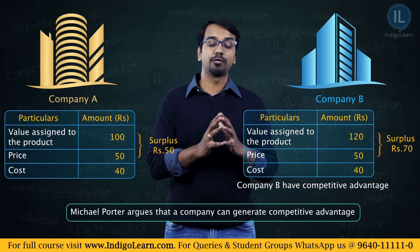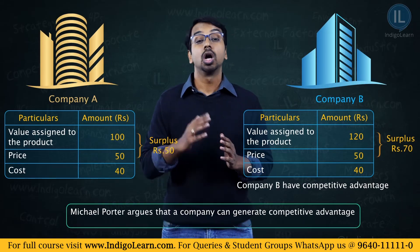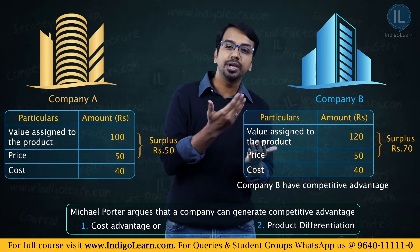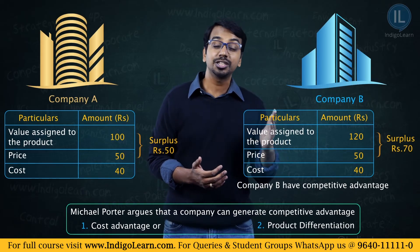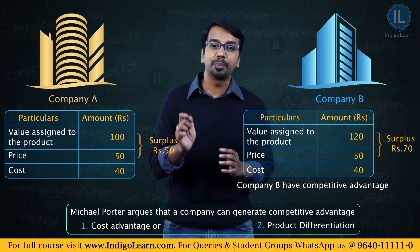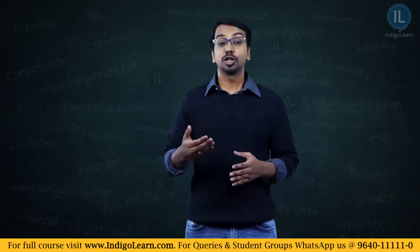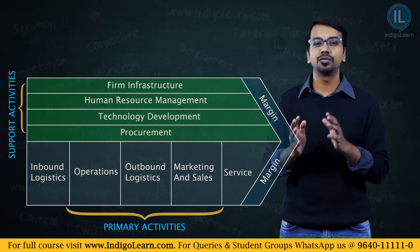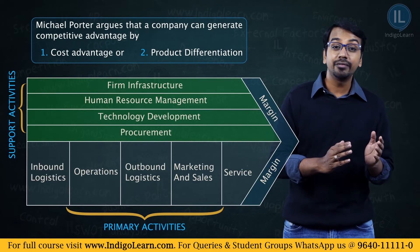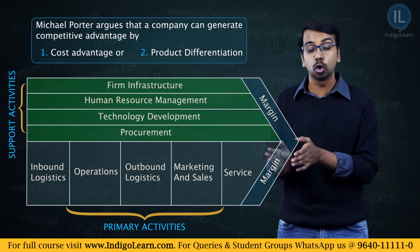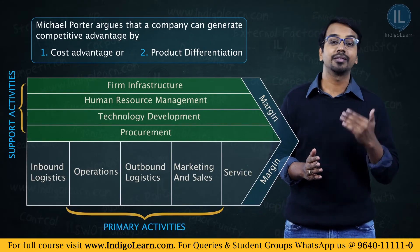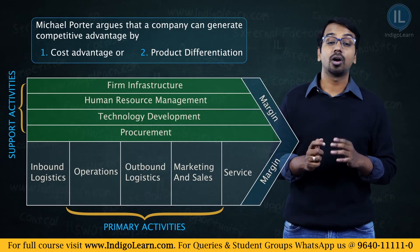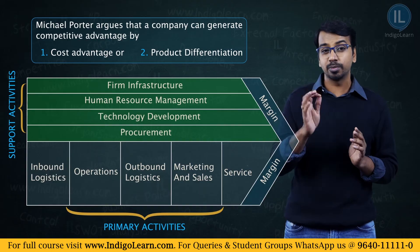Even if costs are the same, if one company provides a superior differentiated product, at the same price incurring the same cost, that company will have a competitive advantage because it is providing higher value. Michael Porter suggested that a company may create competitive advantage either through cost advantage — lower cost for the same product — or through product differentiation — same cost but a superior product. When either of these two scenarios exists, a company will have a definite competitive advantage.